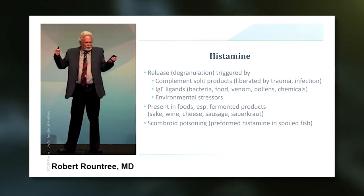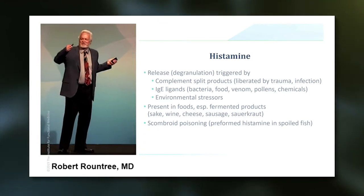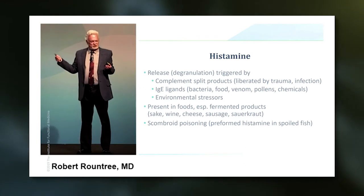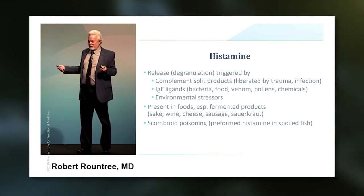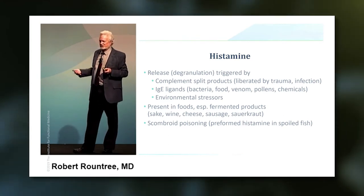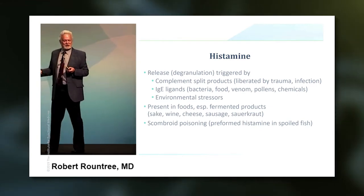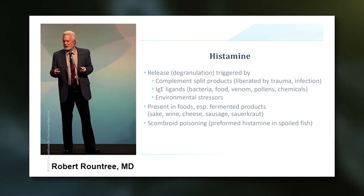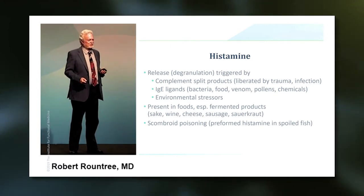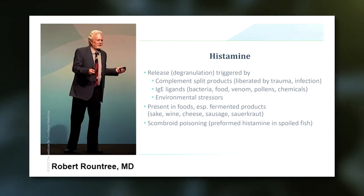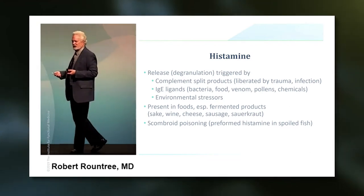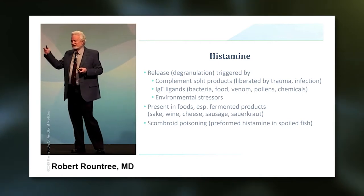Something relatively new is our understanding that there's histamine in food. Spoiled fish can have a lot of it. If you eat spoiled fish, you can get something called scombroid poisoning — people that live in Florida know about this, because you can get it from grouper. If the fish sits on a warm dock too long, it fills up with histamine and causes a problem. But many foods naturally have histamine in them, especially sake, sausage, and sauerkraut. People that are super sensitive to histamine will eat these foods and it looks like they're having an allergic reaction — flushing, diarrhea. They either need to learn which foods to avoid, or they can use an enzyme called DAO, diamine oxidase, that breaks down the histamine inside their body.